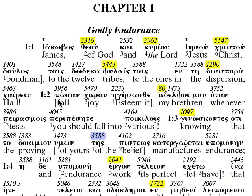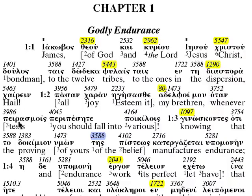'Passin haran igesasthe, Adelphimu, otin pirasmos peripesete poikilais' — esteem it all joy, my brethren — 'Adelphi,' we have the city of brotherly love, Philadelphia — 'Adelphi,' whenever you should fall into various tests. I should have highlighted this word 'pirasmos' — test — because we have a word in our pamphlet on tests, and it's an interesting word.